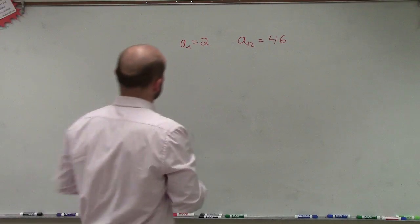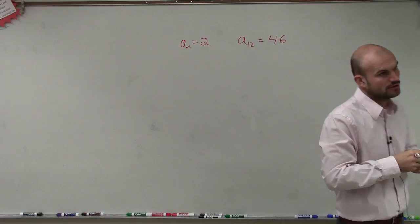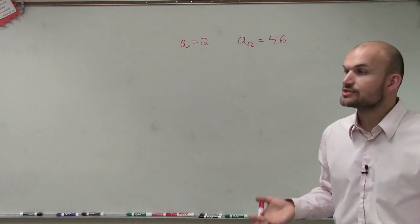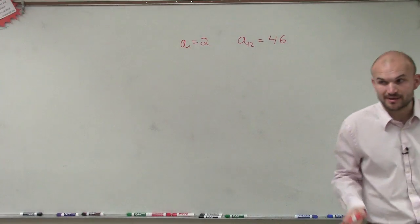Okay, so they're asking us: if they give us a₁ = 2 and a₁₂ = 46, what they're asking us to do is find the first five terms of the arithmetic sequence.